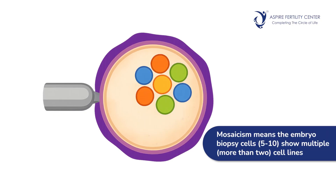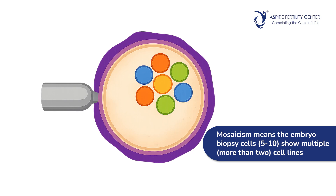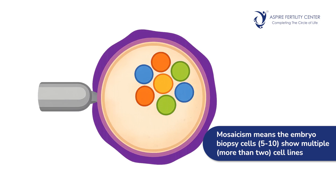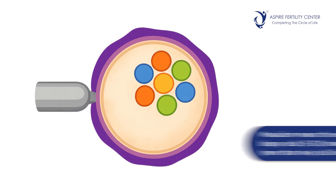Aneuploid embryos definitely should not be transferred. The third kind of report is called a mosaic embryo. Mosaicism is a condition where more than one cell line is present within those 5 to 10 cells taken for biopsy. Mosaicism is reported as either low-level or high-level mosaicism. If it is low-level mosaicism — that is, very limited cell lines, usually less than 25% — after thorough genetic counselling, we can still consider it for transfer. However, once pregnancy happens, there should be additional testing on the baby to make sure the conceptus is normal.